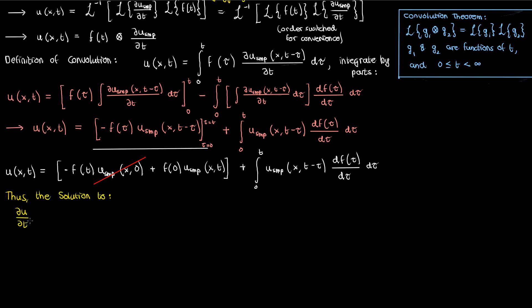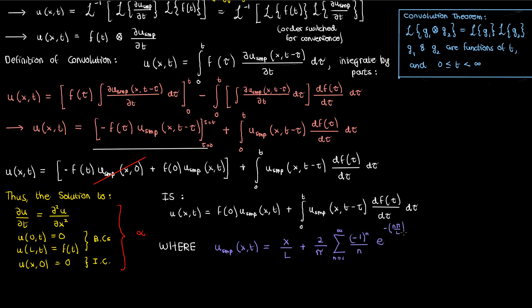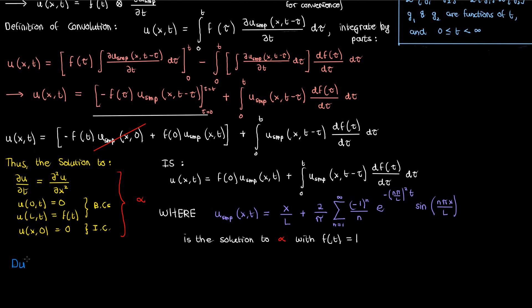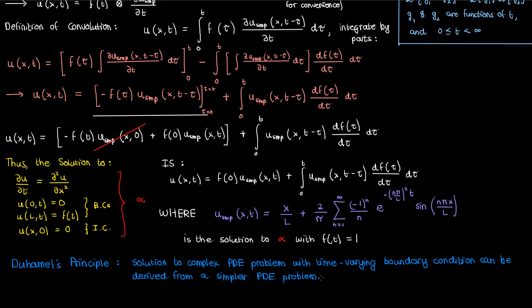And so finally, we find that U of X comma T, the solution to this PDE problem with the time dependent boundary condition, is given by the following, where U sub SMP, which I'll copy paste here, is the solution to the simpler PDE problem where F of T was just one. And this is a demonstration of Duhamel's principle. I can find the solution to a PDE problem with a non-homogeneous, time-varying boundary condition using the solution to a simpler PDE problem with a constant boundary condition.